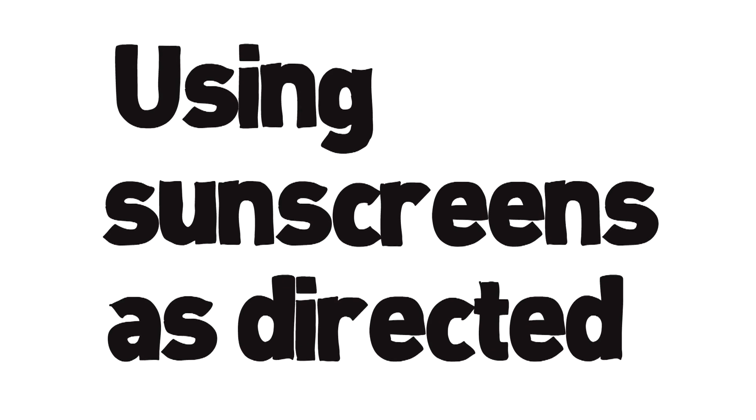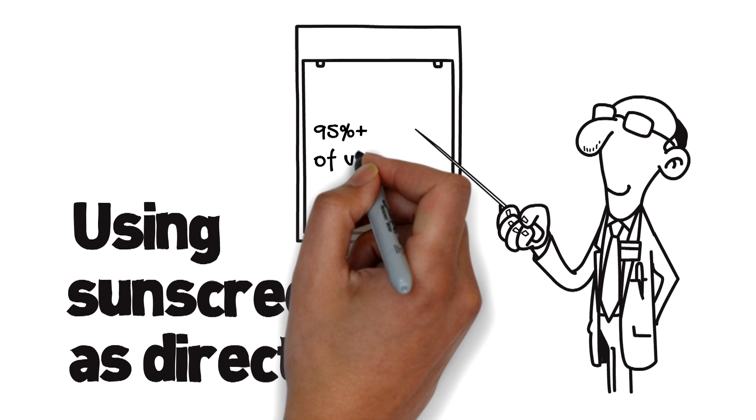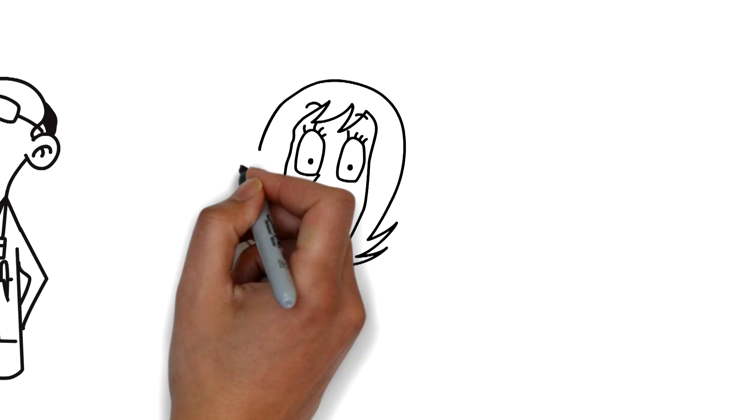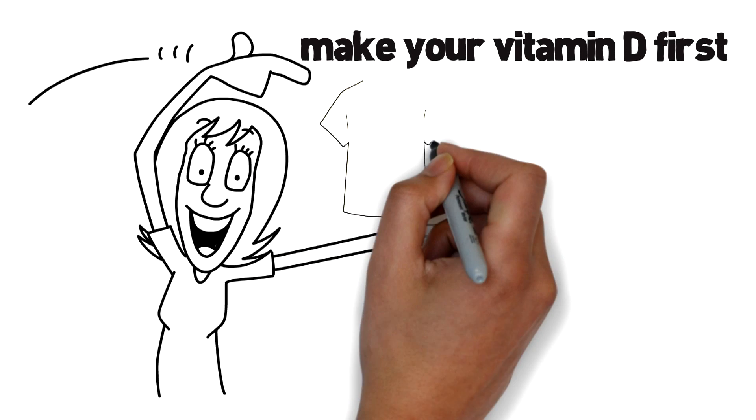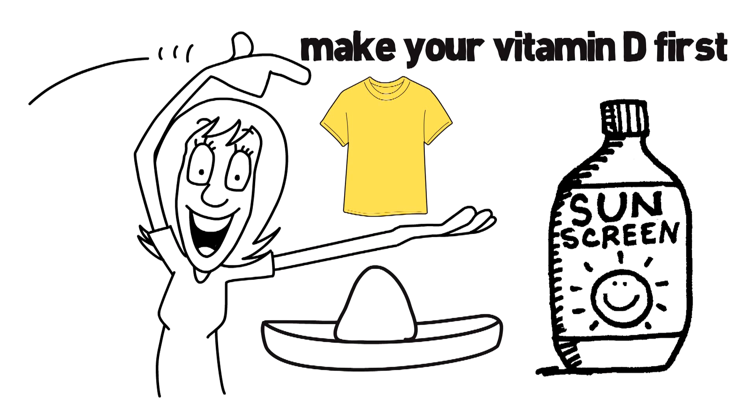Using sunscreens as directed will prevent 95% plus of vitamin D production. So make your vitamin D first and then protect yourself from burning with clothing, shade or sunscreen.